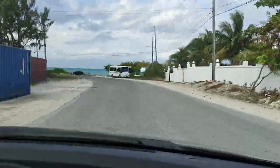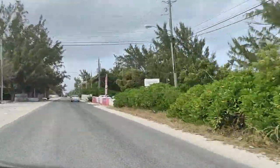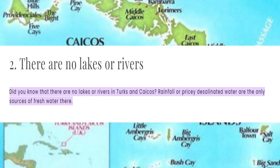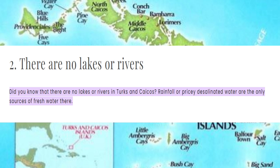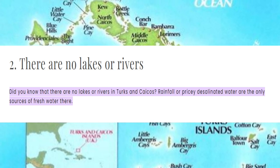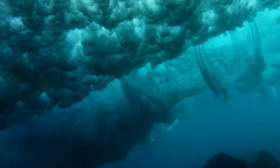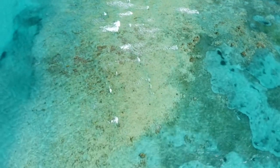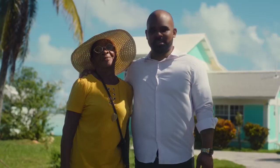In the Turks and Caicos, there is no sustainable agricultural industry because of a lack of deep soil — beautiful white sand is everywhere but cannot sustain crops. Running water is also a problem; rivers don't exist here, and seawater is desalinated to make freshwater. Tourism is king in the Turks and Caicos, attracting more than one million tourists every year.